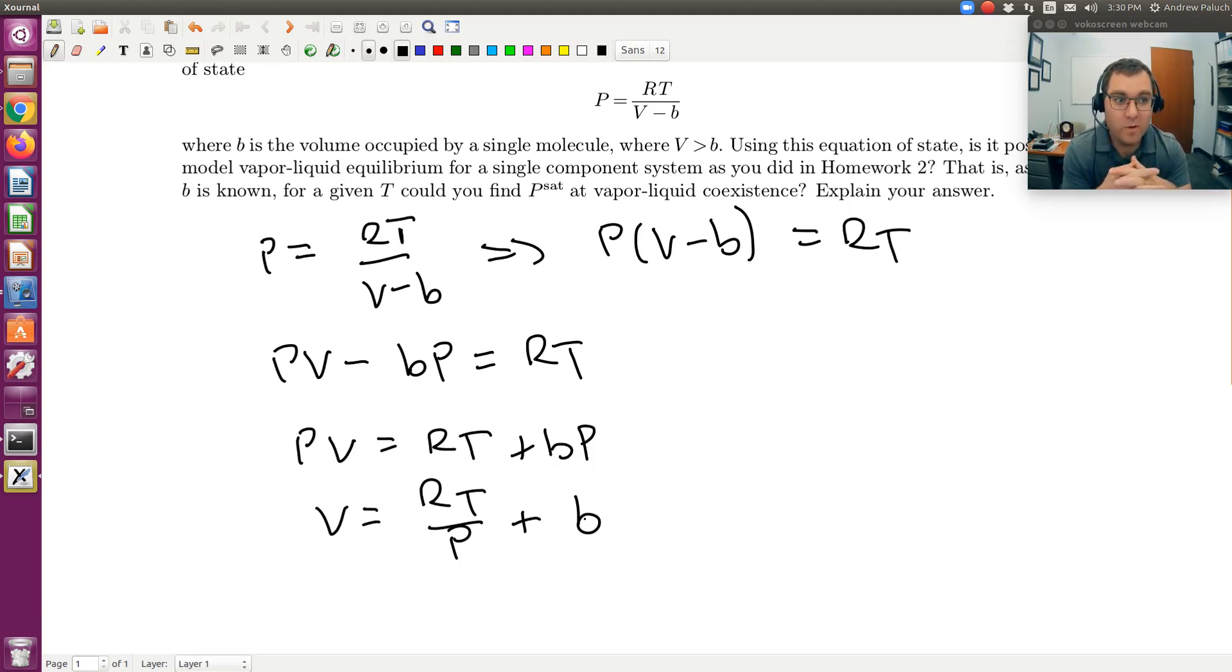So what I find here is I get an equation, if I solve and get an equation explicit in V, I find that for a given temperature and pressure, B is just a constant, R is just a constant. For a given temperature and pressure, I'm only going to solve for a given V. So the fact that I can't get more than one unique V tells me I'm not going to be able to simultaneously model liquid and vapor phase.